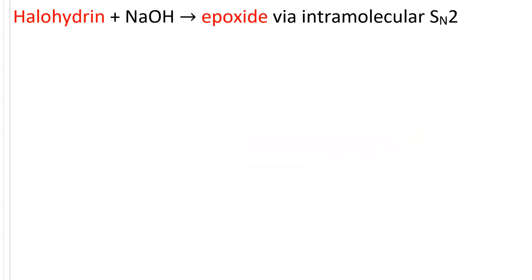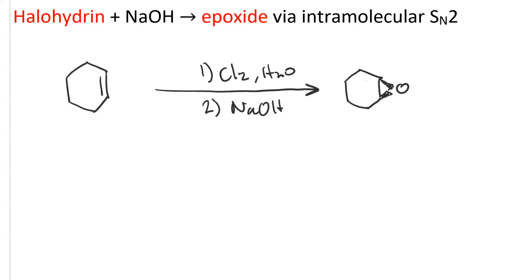The other route to make an epoxide goes through a halohydrin. If you first treat an alkene with a halogen molecule X2 — it can be chlorine, bromine, or iodine — in water, you get a halohydrin, which if you then treat with sodium hydroxide, it does an intramolecular Williamson ether synthesis. Let's look at the details.